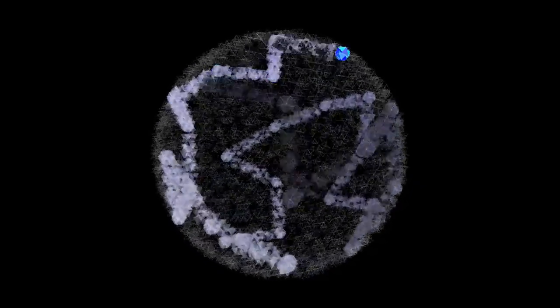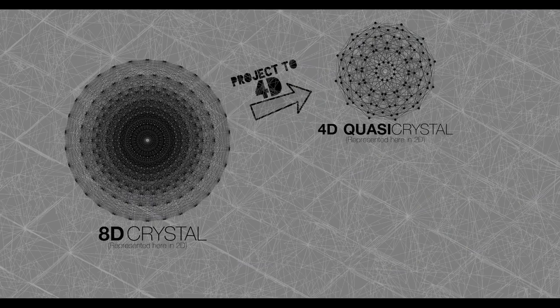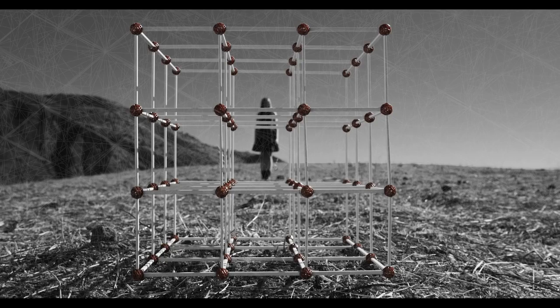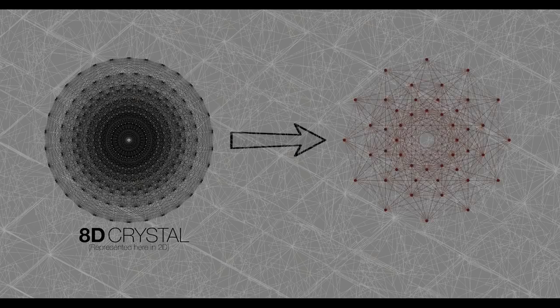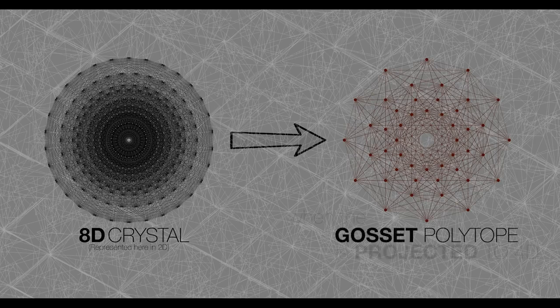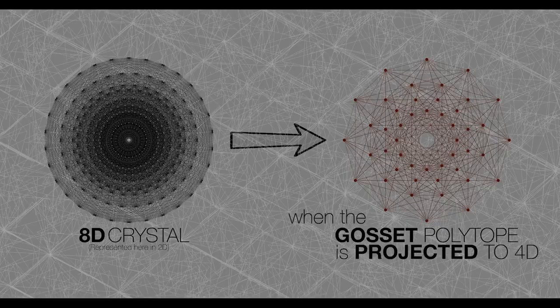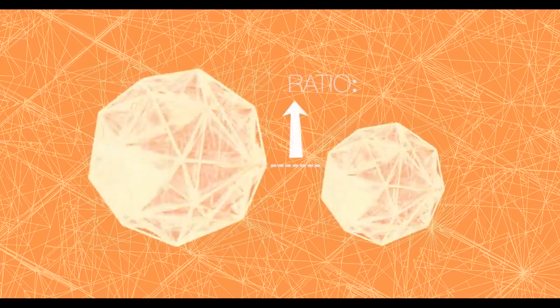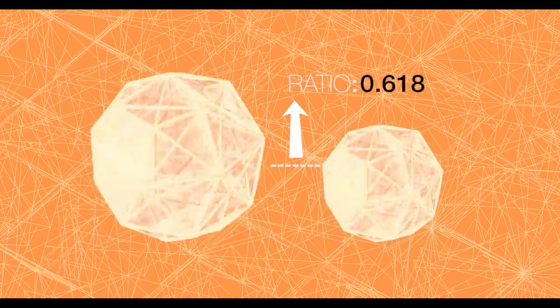To generate that 3D quasicrystal — the substructure of the pixelated fabric of reality — we project this 8D crystal to 4D, and then convert that to 3D. Just like the basic cell shape of the 3D cubic lattice is the cube, the cell shape of the E8 lattice is an 8D shape with 240 vertices called the Gossett polytope. When the Gossett polytope is projected to 4D, it becomes two identical shapes of different sizes. The ratio of their sizes is a unique number — 0.618 — also known as the Golden Ratio.